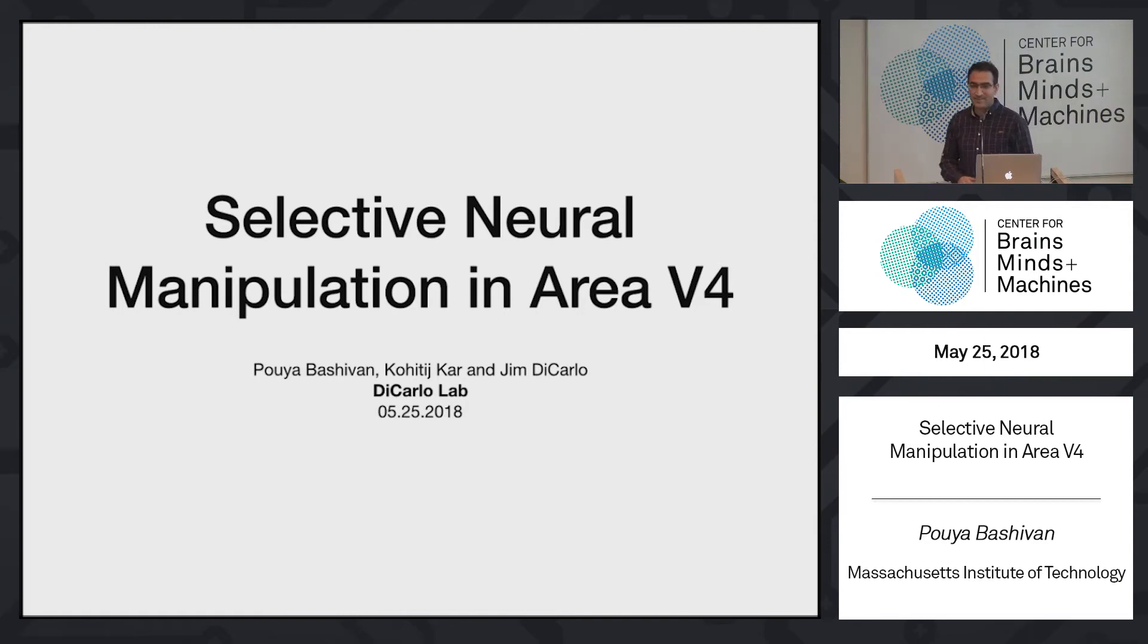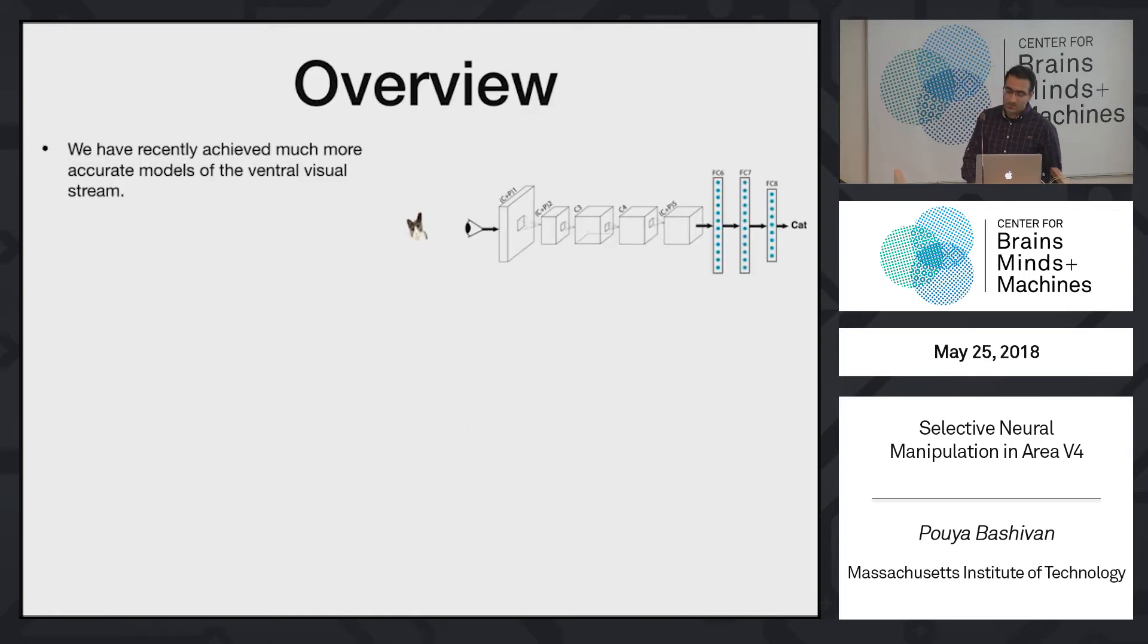Good morning, everyone. My name is Pooja. I'm going to talk to you about the work that I've been doing with Coe and Jim DiCarlo. I'm a postdoc at Jim DiCarlo's lab. The work is about controlling individual neurons' activities in area V4.